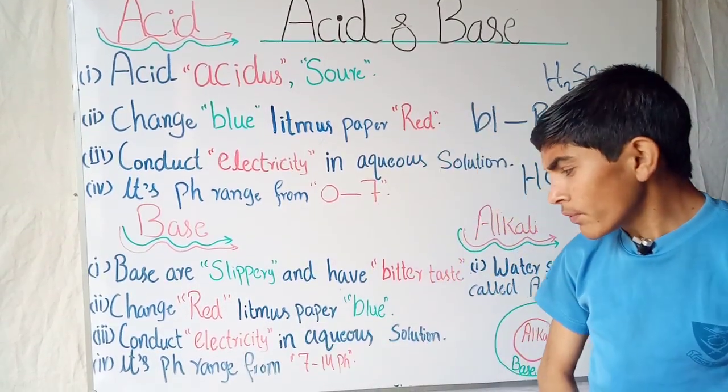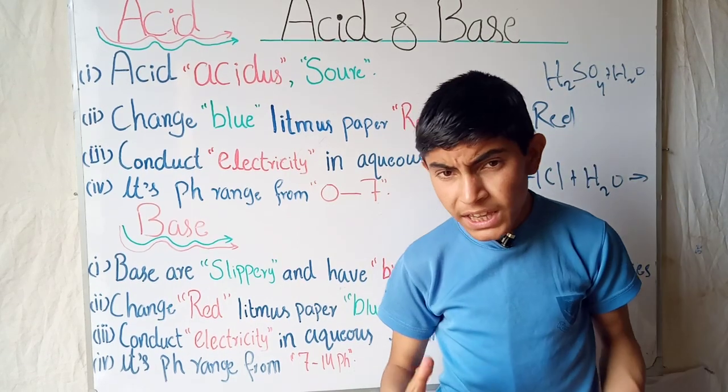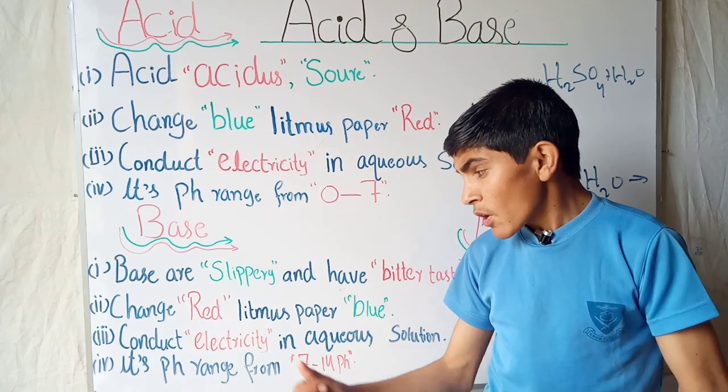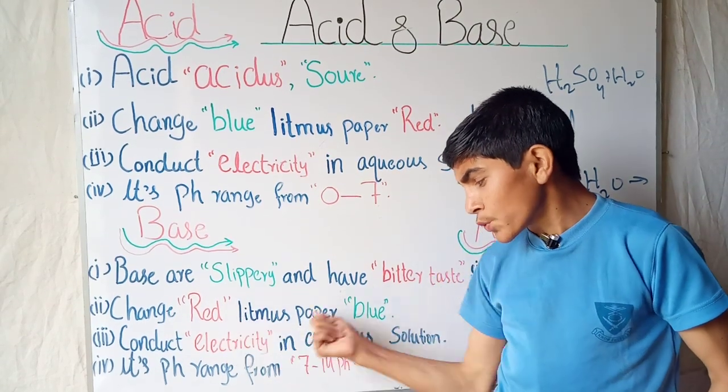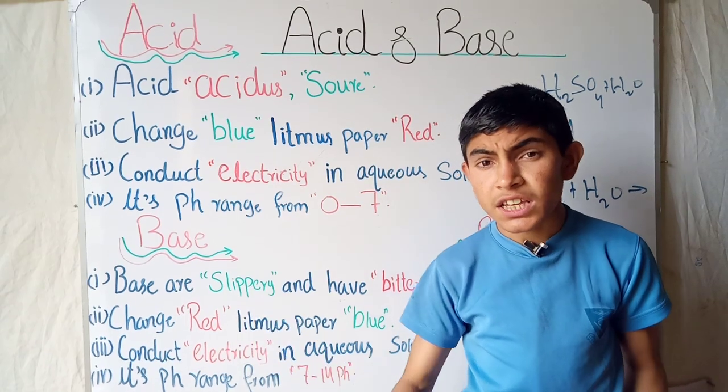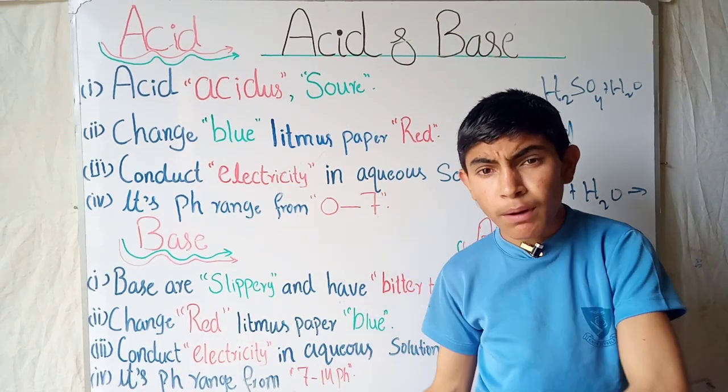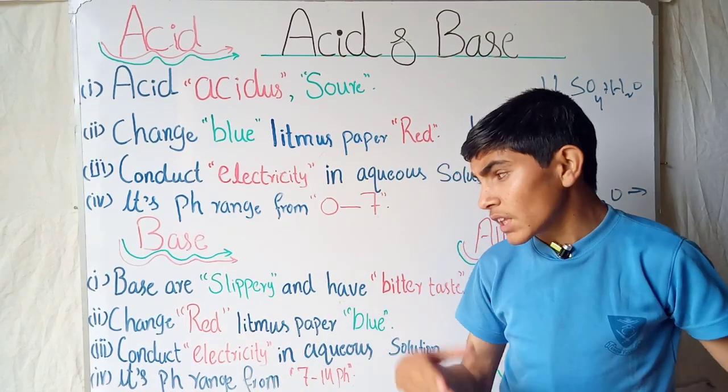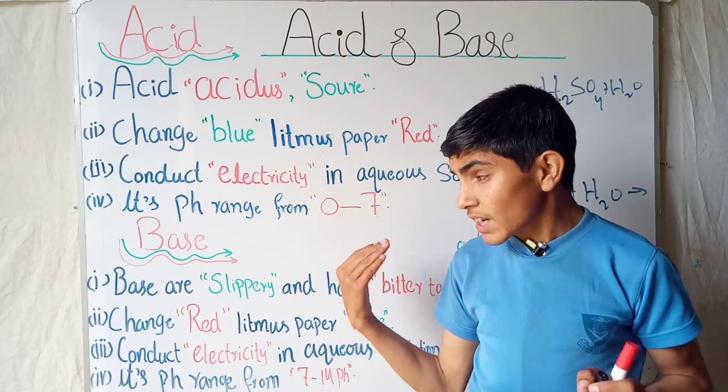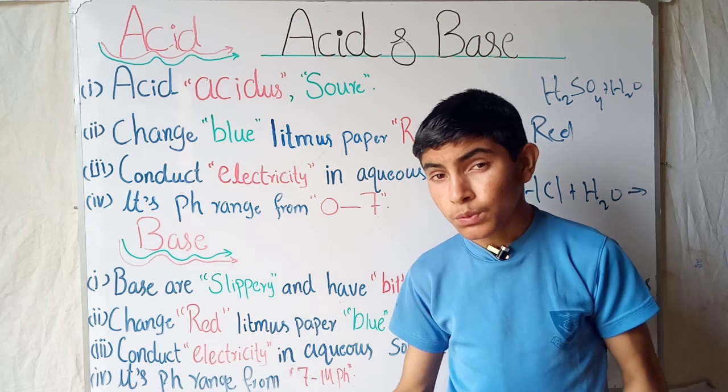They change red litmus paper into blue. So they change the color of acid-base indicator from red to blue when the color of the indicator is red, so it ultimately changes into blue. This way we mention that the color of the base is blue.